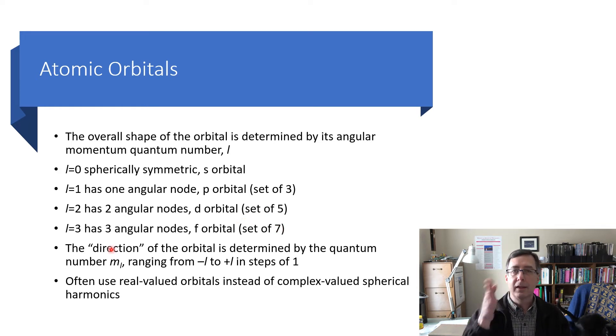The direction that the orbital is pointing in is determined by the quantum number M sub L. And M sub L can go from minus L up to plus L in steps of one. So, for the P orbitals, you could have M sub L minus one, or zero, or one. For D, you can have minus two, minus one, zero, one, or two, et cetera. And I already mentioned, although that's what comes out of the Schrödinger equation, these Y_LM spherical harmonics, we take plus and minus combinations and turn them into real functions so that we can plot them and look at them and analyze them and code them up in a computer program in an easier way.